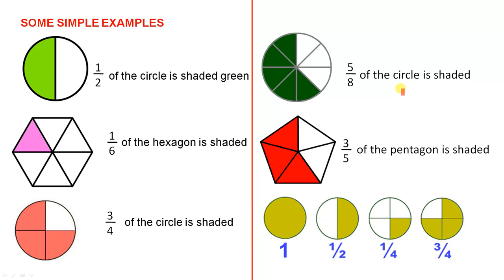Five eighths of the circle is shaded, one, two, three, four, five out of a total of eight. Three fifths of the pentagon is shaded, three parts out of a total of five. And here we have some interesting parts of a circle.